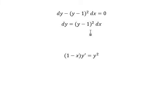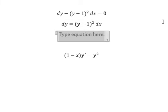Next we divide both sides by this one, so we have dy over (y minus 1) to the power of 2.